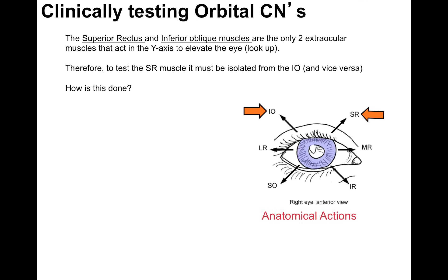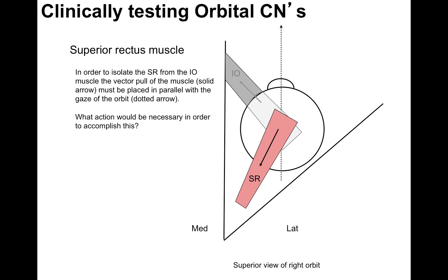The superior rectus and inferior oblique muscles are the only two extraocular muscles that act in the y-axis to elevate the eye and look up. Therefore, to test the superior rectus muscle, it must be isolated from the inferior oblique and vice versa. The superior rectus muscle is shown here in pink and the inferior oblique is grayed out. In order to isolate the superior rectus from the inferior oblique muscle, the vector pull of the muscle — the solid arrow — must be placed in parallel with the gaze of the orbit — the dotted arrow.